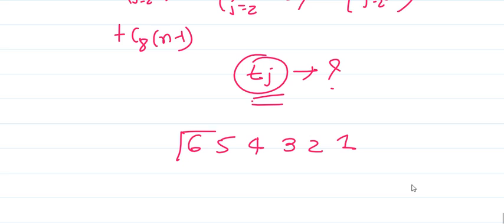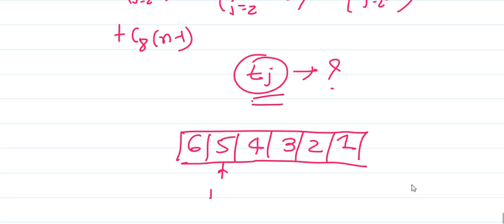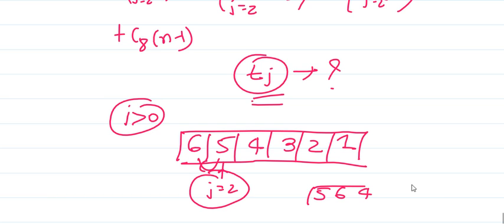Let's consider this case where my input is like this: 6, 5, 4, 3, 2, 1. Let's analyze what will happen if my input is like this for the insertion sort. As you can see, for each value of J - for example, this value of J is 2 for this particular point - I need to compare this 5 with 6 and then check whether my i is greater than zero or not as a condition of the while loop. So basically I am doing two comparisons for J equals 2.